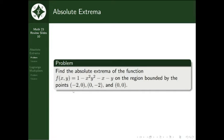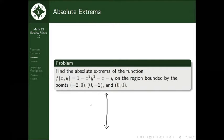We have the first problem: find the absolute extrema of the function f(x,y) = 1 minus x squared y squared minus x minus y on the region bounded by the following points. Before we start solving, let's look at this region, because when finding the absolute extrema of a function, it's important to understand what the boundaries look like. We won't understand the boundaries without drawing the region itself.